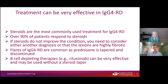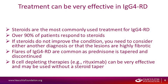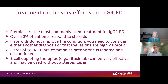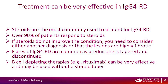Treatment can be really effective in IgG4-related disease. Like many conditions managed by rheumatologists, we use a lot of steroids, and while we try to avoid them because of side effects, they can work really well. There was actually a trial done where they looked to see whether steroids work, and over 90% of patients responded to steroids. If steroids don't help or don't make the condition go away, we need to either rethink the diagnosis, or consider that the manifestation may be in a very fibrotic stage that's not very responsive to steroids. If steroids aren't working as expected, we need to reevaluate things.